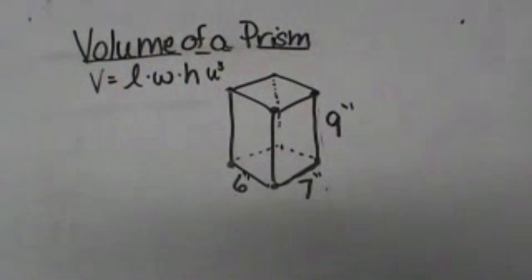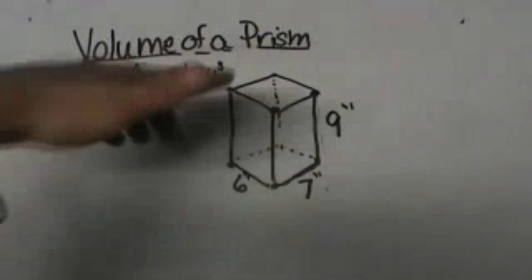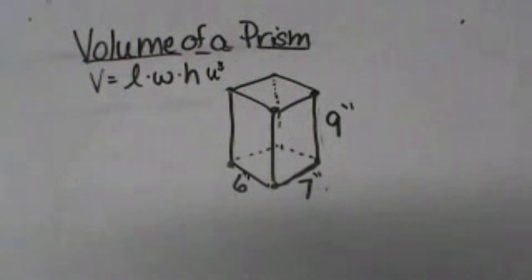First of all, what is a prism? A prism is a three-dimensional figure with parallel bases.